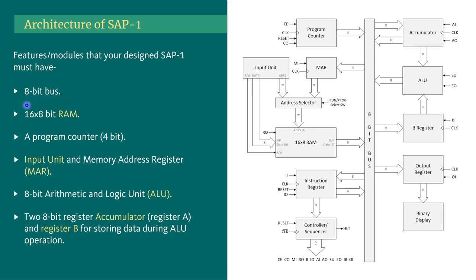The first module we will need is an 8-bit bus — here we can see the bus. Then we need RAM; for our design we will need a 16×8-bit RAM. Then a 4-bit program counter, an input unit, and a memory address register also called MAR. Then we need an 8-bit arithmetic and logic unit, also called ALU, which is the main processing unit of our design.